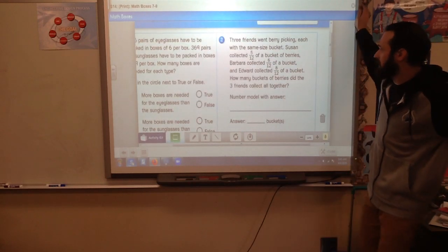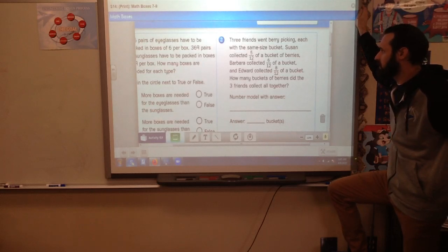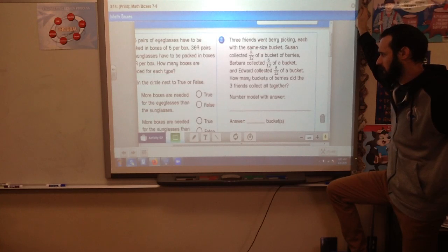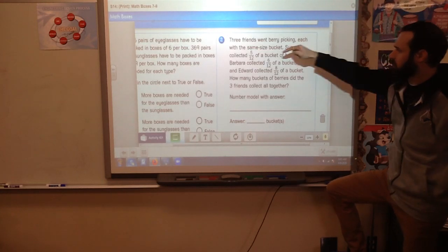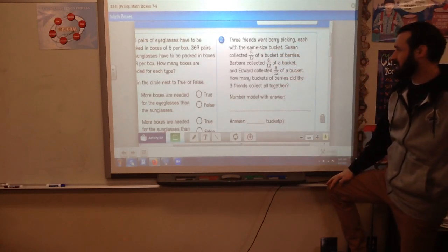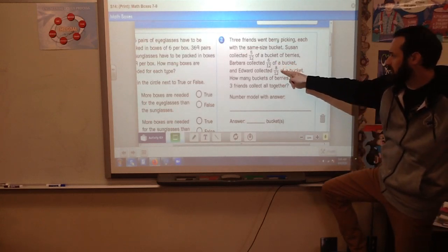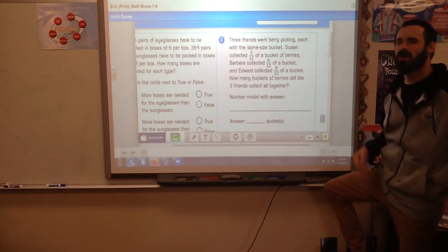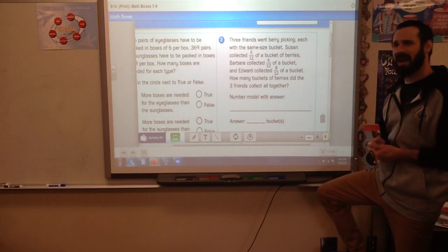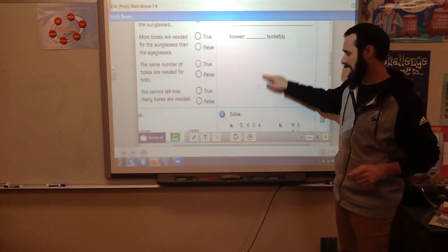Over here, three friends went berry picking, each with the same size bucket. Susan collected 5 twelfths of a bucket of berries, Barbara 6 twelfths, and Edward 8 twelfths. How many buckets of berries did the three friends collect? You're going to get an improper fraction because 6 plus 8 is already more than 12. Remember to divide that and make it a mixed number rather than an improper fraction.